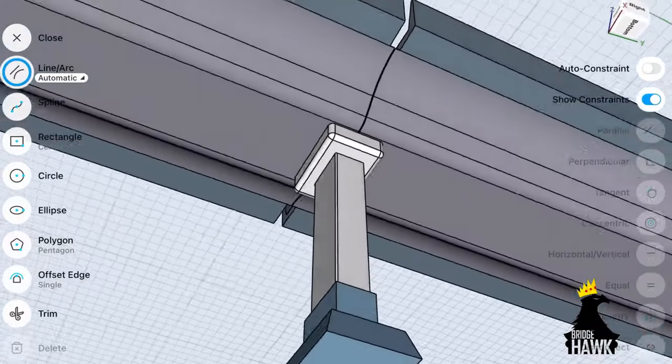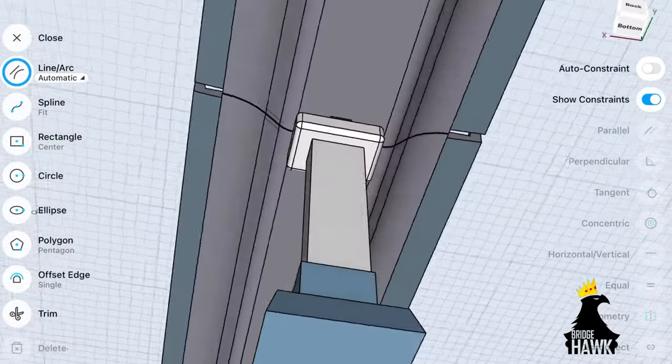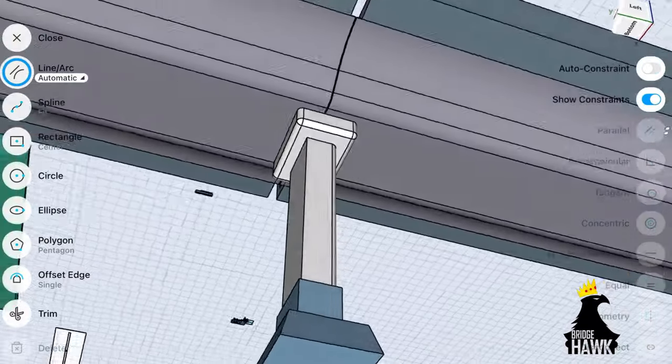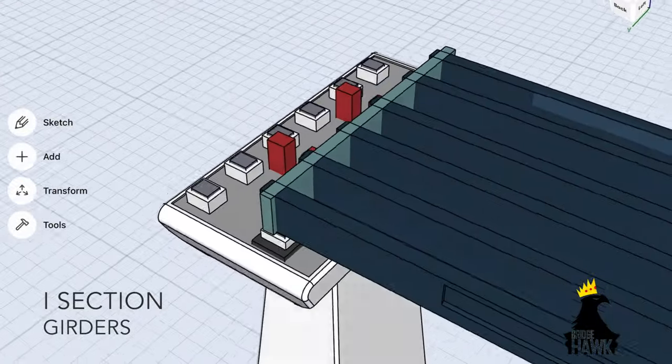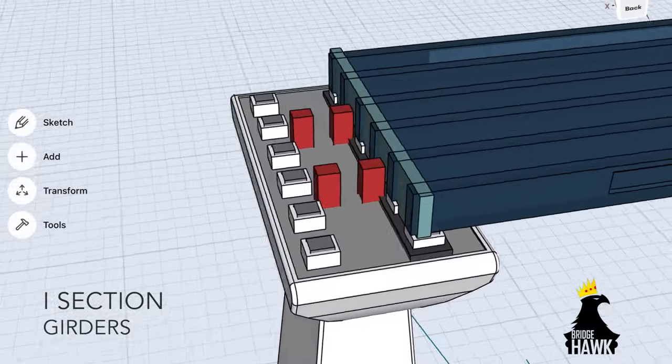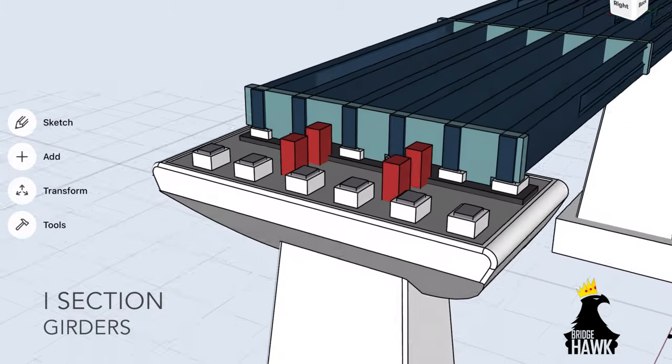Since spans on either sides will transfer forces to the pier, two end segments will pound the arrestor from both the directions. Now let us look at another type where we have I section girders. I sections may either be of steel or concrete PSC.